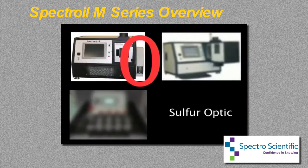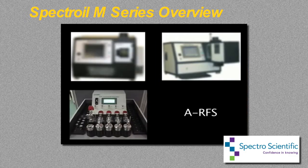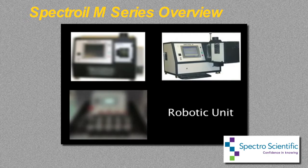Optional accessories include the sulfur optic, the ARFS Rotrode Filter Spectroscopy System for the analysis of large particles, and the D2R2 double disk rapid robot system for automatic and unattended operation.